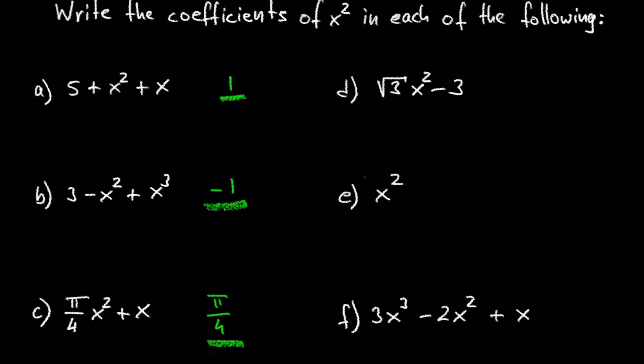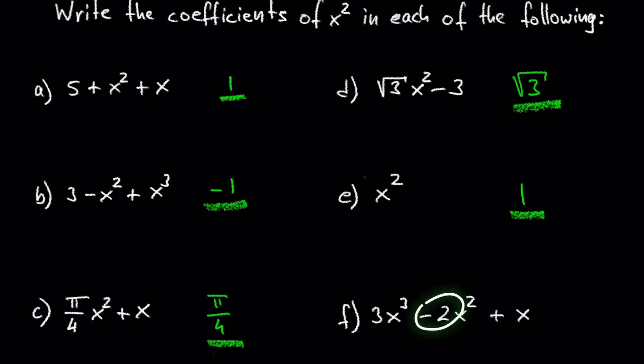In D we have the square root of 3 times x squared minus 3. The coefficient of x squared is the square root of 3. In E we have x squared, which means the coefficient is 1. In F we have 3x cubed minus 2x squared plus x. The coefficient of x squared is negative 2.